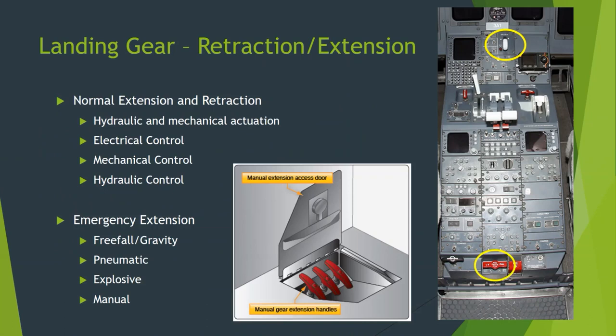Here in the center pedestal shown earlier, at the bottom there's a red T-handle circled in yellow — that's an emergency extension handle. Another image shows how there can be three separate manual extension handles, like what the 727 uses.